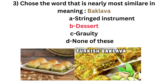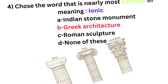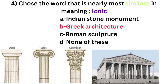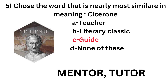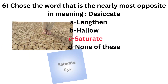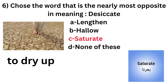Baklava is a dessert. Next one is: choose the word nearly most similar in meaning — synonym of 'ionic'. Ionic is a Greek architecture style from previous times, so it is option B. And the most similar meaning of 'cicerone' — cicerone means mentor, tutor, or guide, so it is option C.